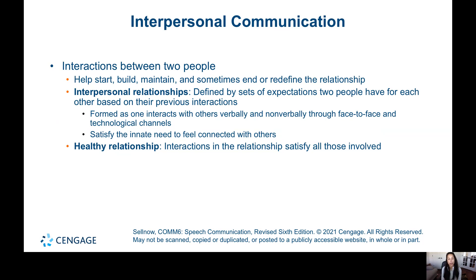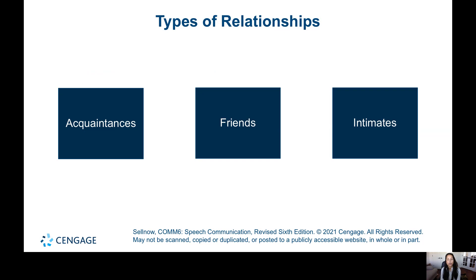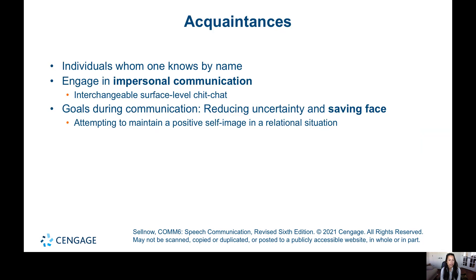A healthy communication pattern satisfies both people — not just one person while the other doesn't get to share their thoughts. There are three types of relationships we encounter: acquaintances, friends, and intimates. Acquaintances are individuals we know by name and interact with, but they're not people we have deep conversations with. We have more of what is called impersonal communication — surface-level chit-chat.